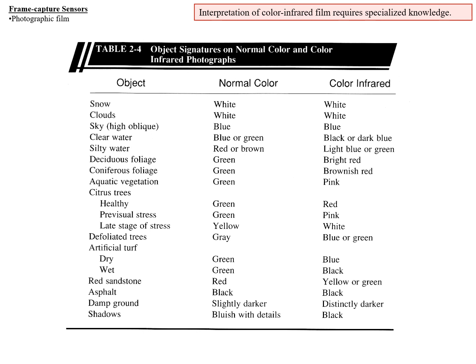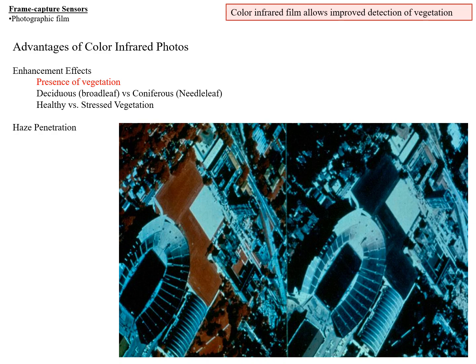Here's a table giving a notion of what objects show up as certain colors in normal color versus color infrared. It's worth going through to understand why certain normal colors are associated with certain color infrared colors. One key advantage of color infrared is that it shows the presence of vegetation easily. Looking at two images of a portion of a campus, the color image on the right makes it unclear whether some dark areas are vegetation or asphalt parking lots. In the color infrared on the left, those dark areas come out as red, so we recognize they must be grass.